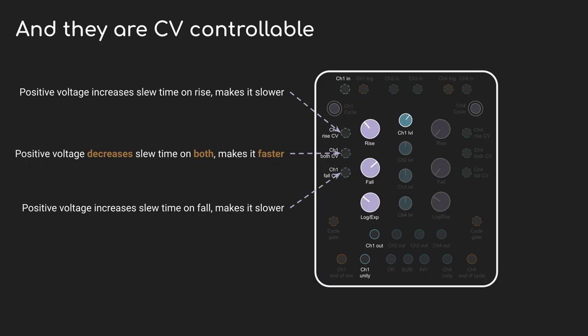Like most things with Maths, almost everything is CV controllable, though it gets a bit weird. The rise and fall CVs work one way: put in a positive voltage and the slew time increases, so it goes slower; put in a negative voltage and it gets faster. The both CV input works the opposite way — put in a positive voltage and both the rise and fall go faster; put in a negative voltage and it goes slower. I'm not sure why they switched up that behavior, but unless you know it's happening, it can be a little confusing.